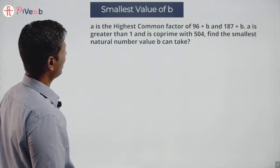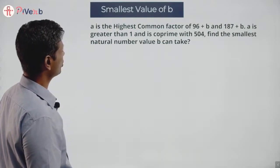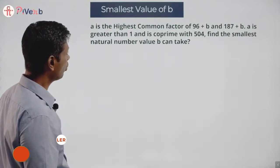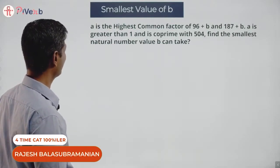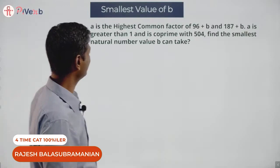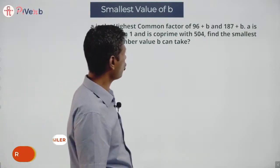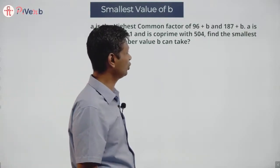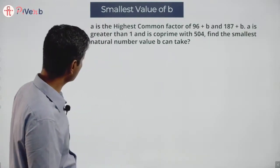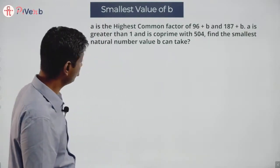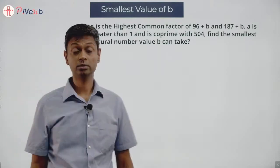A is the highest common factor of 96 plus B and 187 plus B. A is greater than 1 and coprime with 504. Find the smallest natural number value B can take.